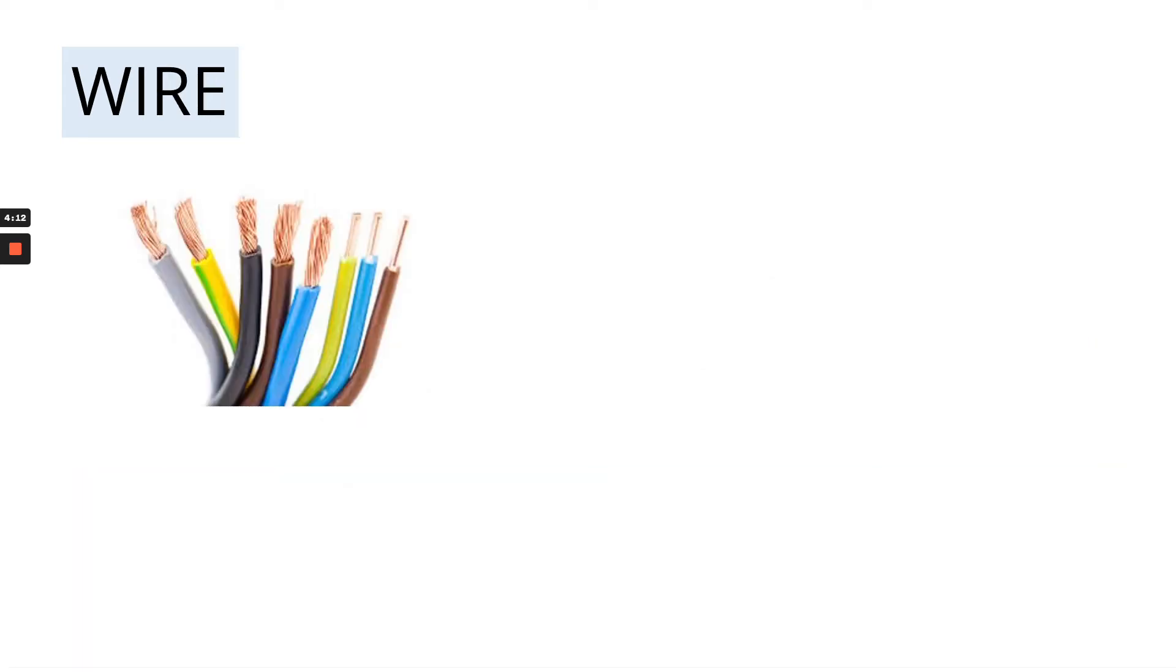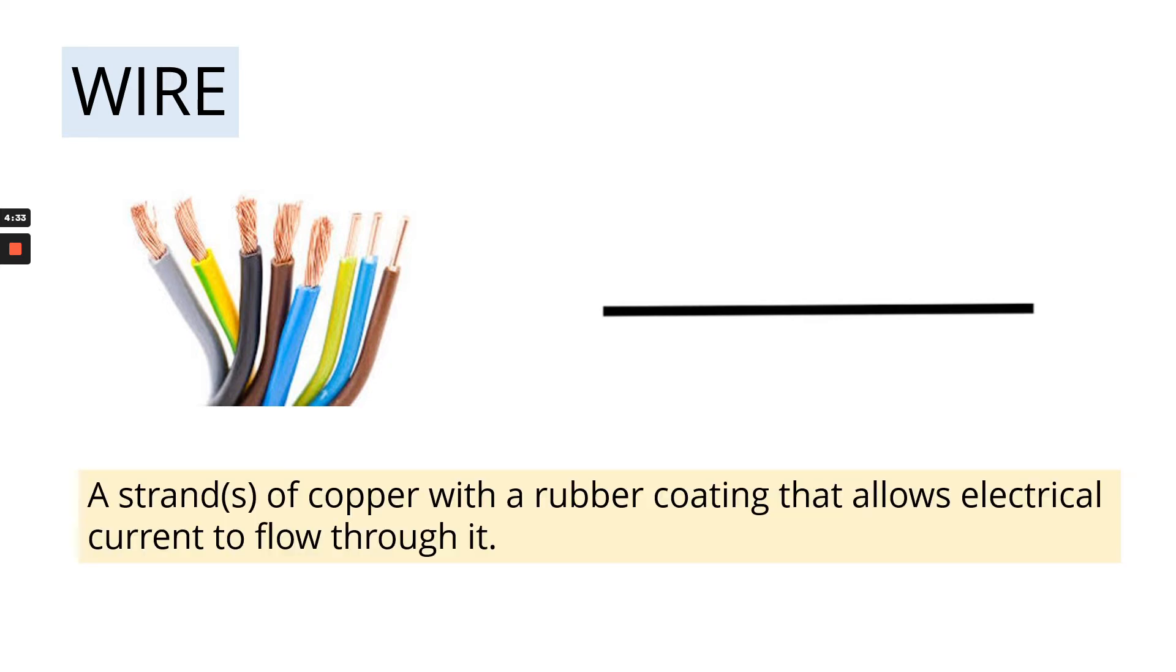OK, our next component is a wire. So electrical wire is normally made from copper, like individual strands of copper, and it's coated in a rubber or plastic coating to protect it. This is the easiest symbol that you will have, and it's just a straight line. And the description of wire is that they are strands of copper with a rubber coating that allows electrical current to flow through it.